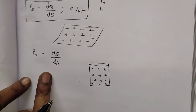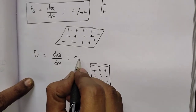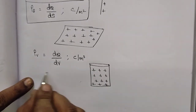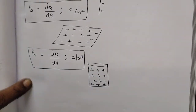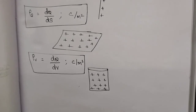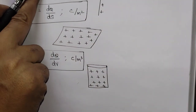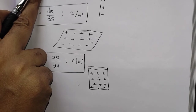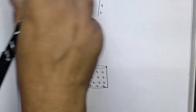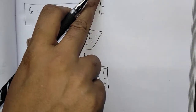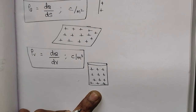The unit of volume charge density is coulomb per meter cubed, since it is a volume. In summary, charge density comprises three types: line charge distribution, surface charge distribution, and volume charge distribution.